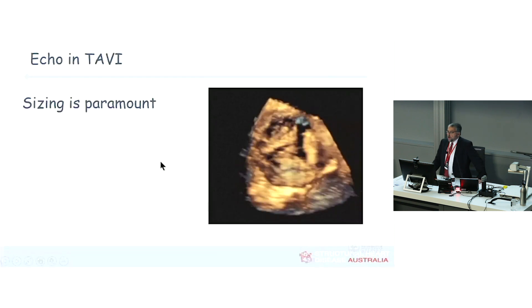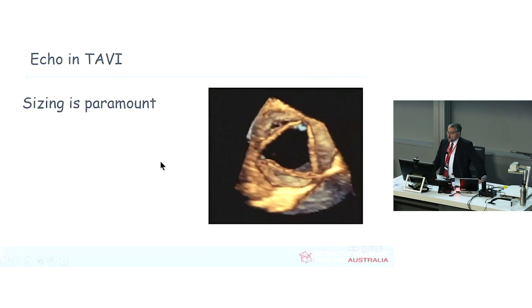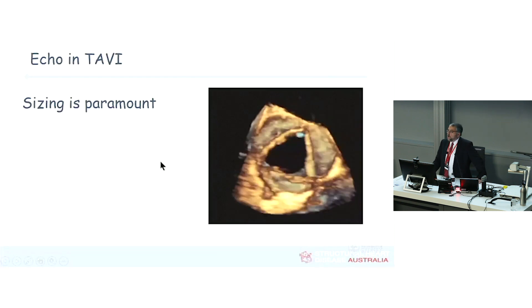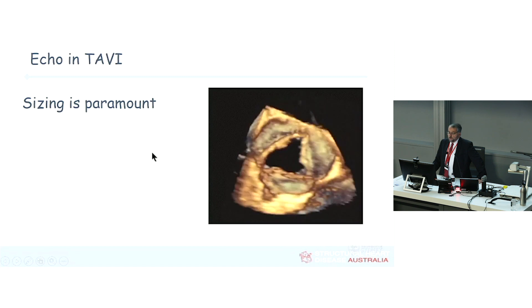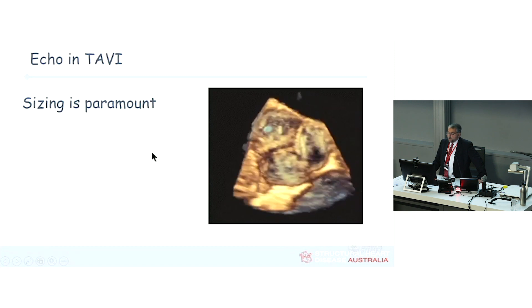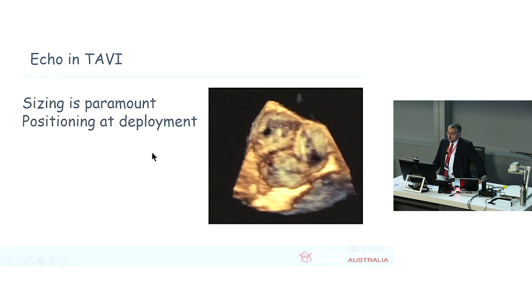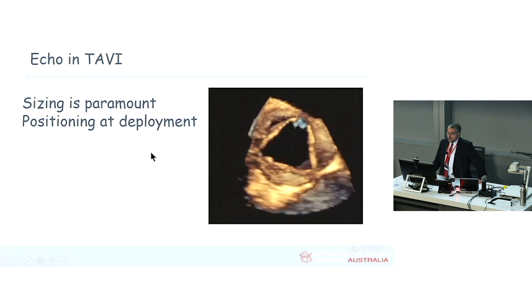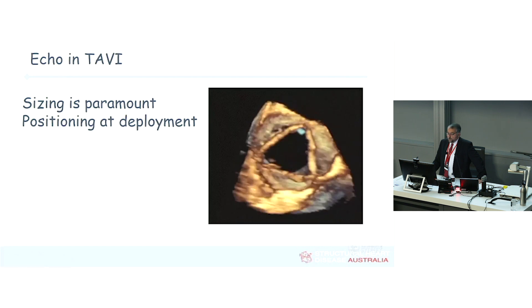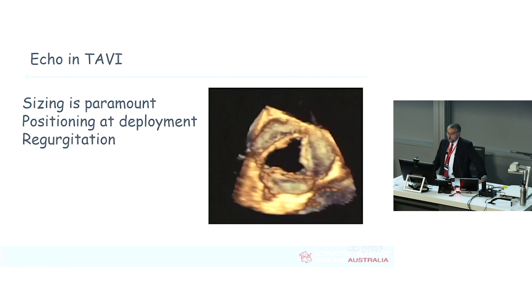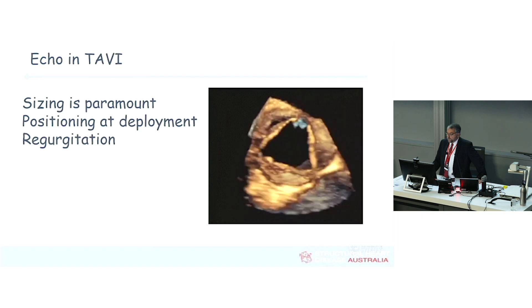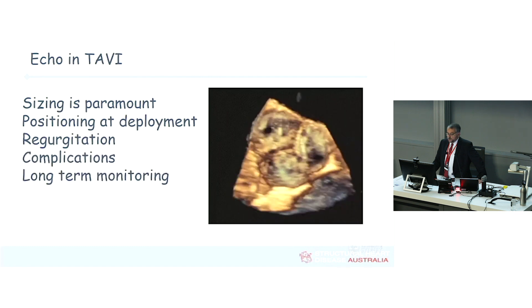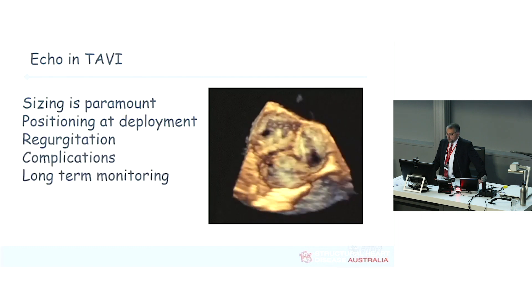To summarise, what do we help decide with echo? We help decide whether or not there is severe aortic stenosis. We contribute to sizing. If involved in the procedure, we help with axial deployment of the device. Most importantly, we look for regurgitation, complications, and long-term monitoring. Thanks very much.